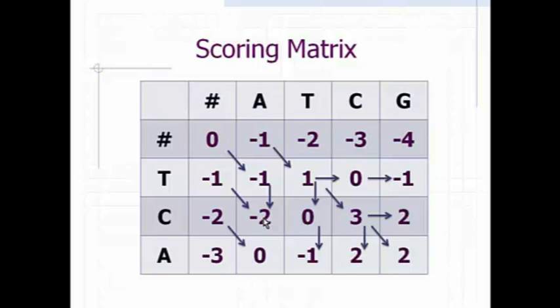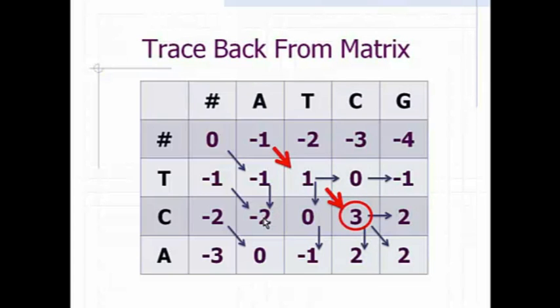Here is the scoring matrix completed — that is one of the steps of the global alignment system. Now we will go to the next step: traceback from the matrix. For the traceback system, we consider the maximum value. Here we have the maximum value of 3, and if we get 2 maximum values then we would consider 2 paths, but here we have 1 maximum value which is 3. This value came from a particular direction. I have marked all the directions and circled the maximum values.